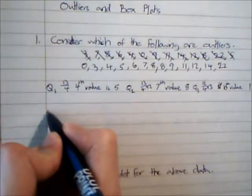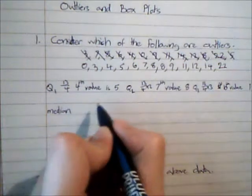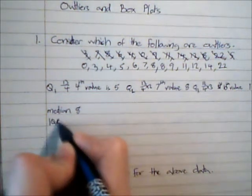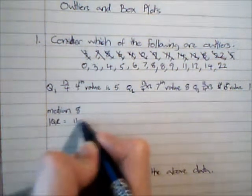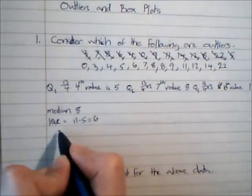So the median then is Q2, which is 8, and the interquartile range is 11 minus 5, which is 6. Now I'm going to work out my boundary conditions for outliers.